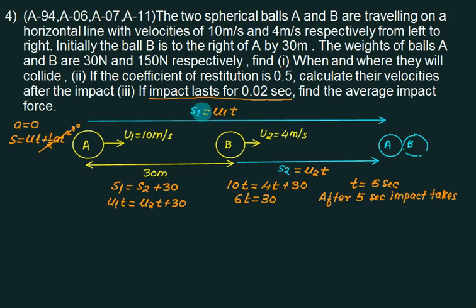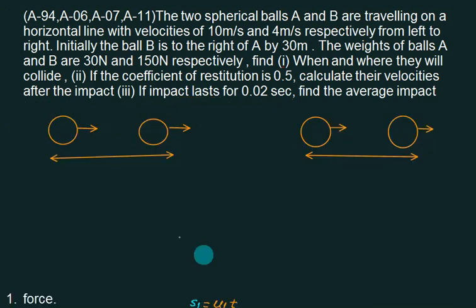He has also asked you where they will collide. So can we calculate S1 distance? We can calculate S1. S1 equals U1*t. U1 is 10, t is 5, so after 50 meters will the collision take place. So this situation demonstrates before impact.